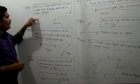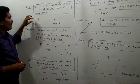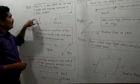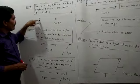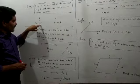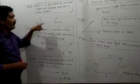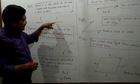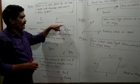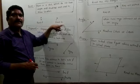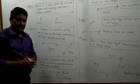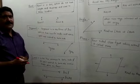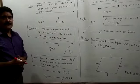This is point P — this is the dot — and you will represent and read this as 'Point P.' This is point K, and you will read this as the word 'point' followed by the name K. So, for showing a location, you will use a point.